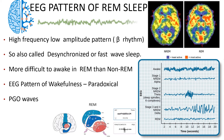PGO waves — Ponto-geniculate-occipital waves — are recorded in cats but in humans are not normally detectable by scalp EEG; however, they can be recorded by depth EEG. These waves originate in the pons, pass to the lateral geniculate body, and then to the cerebral cortex — that is why they are called Ponto-geniculate-occipital waves. These waves activate the reticular inhibiting area in the medulla, which produces hypotonia.